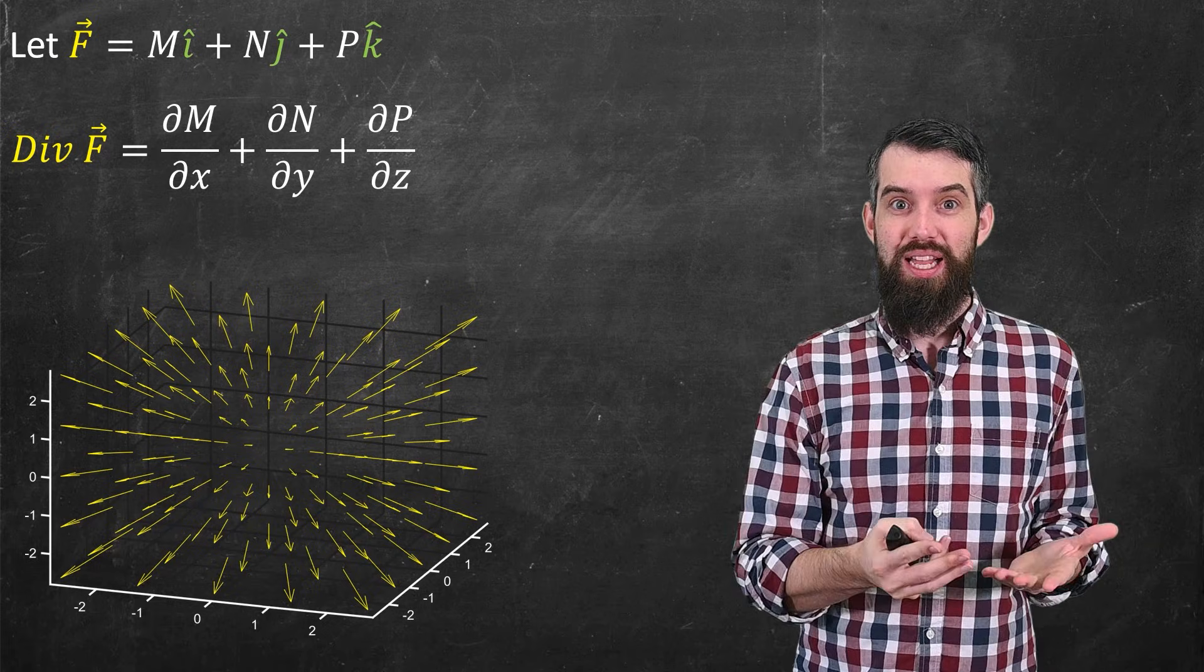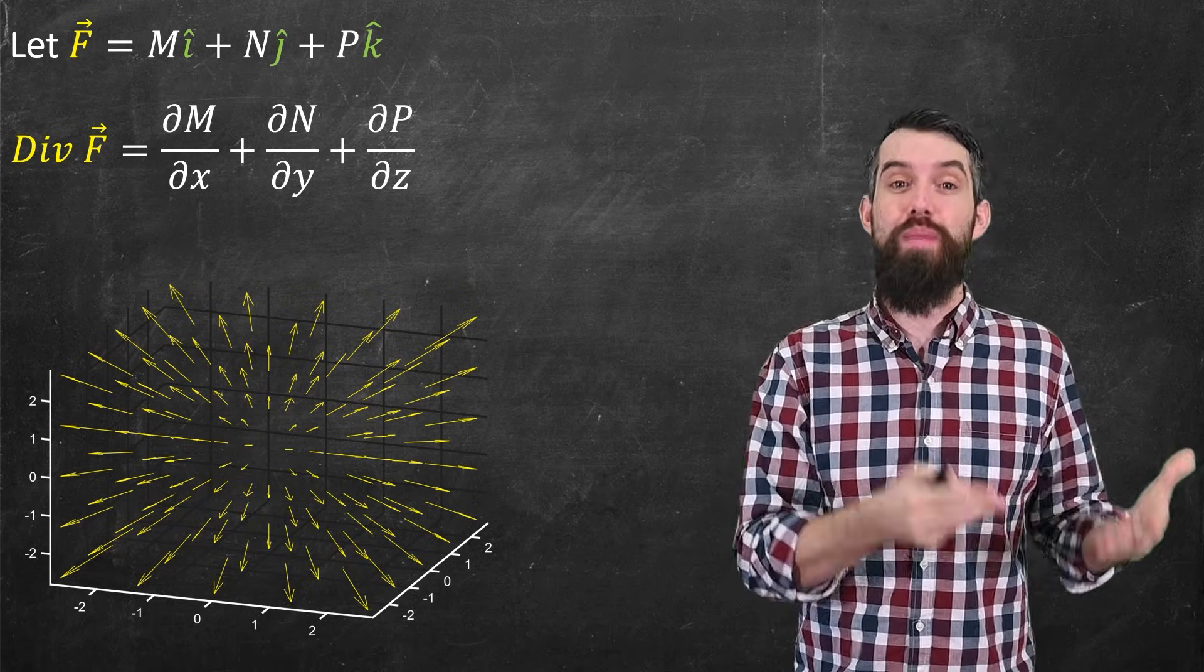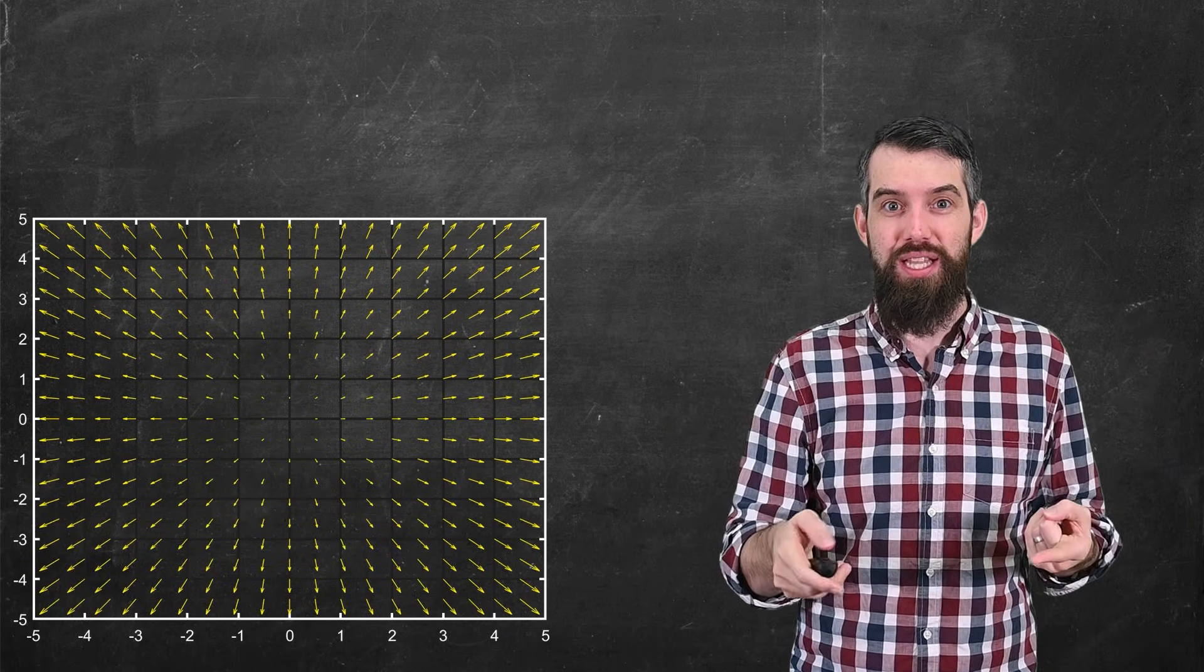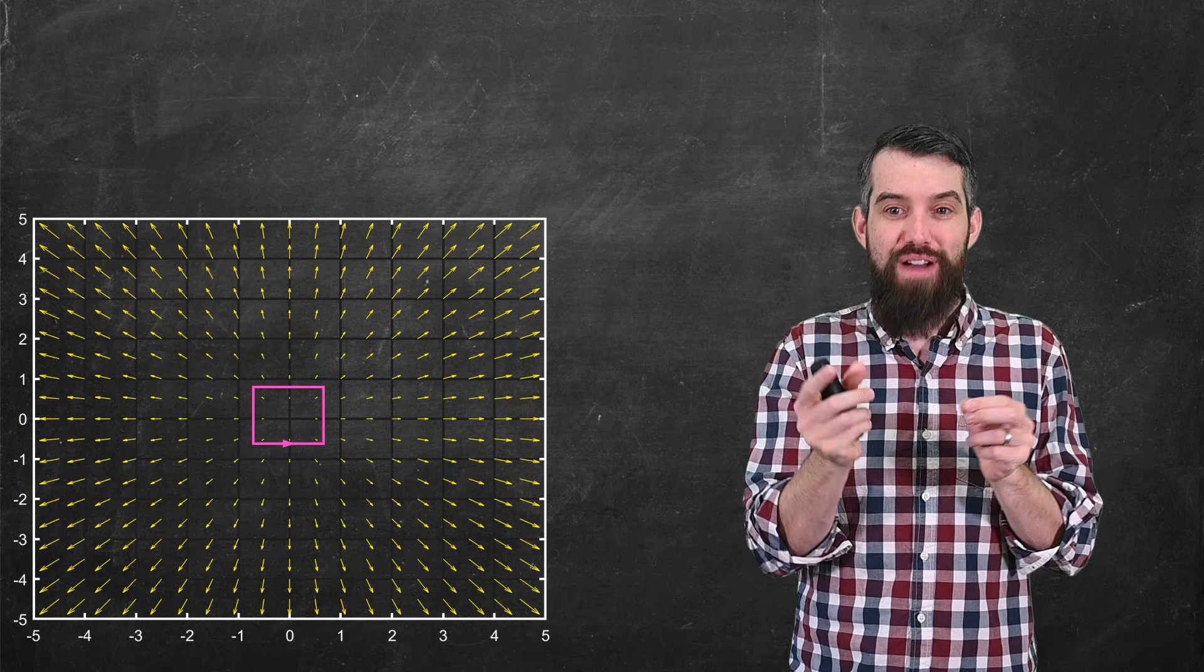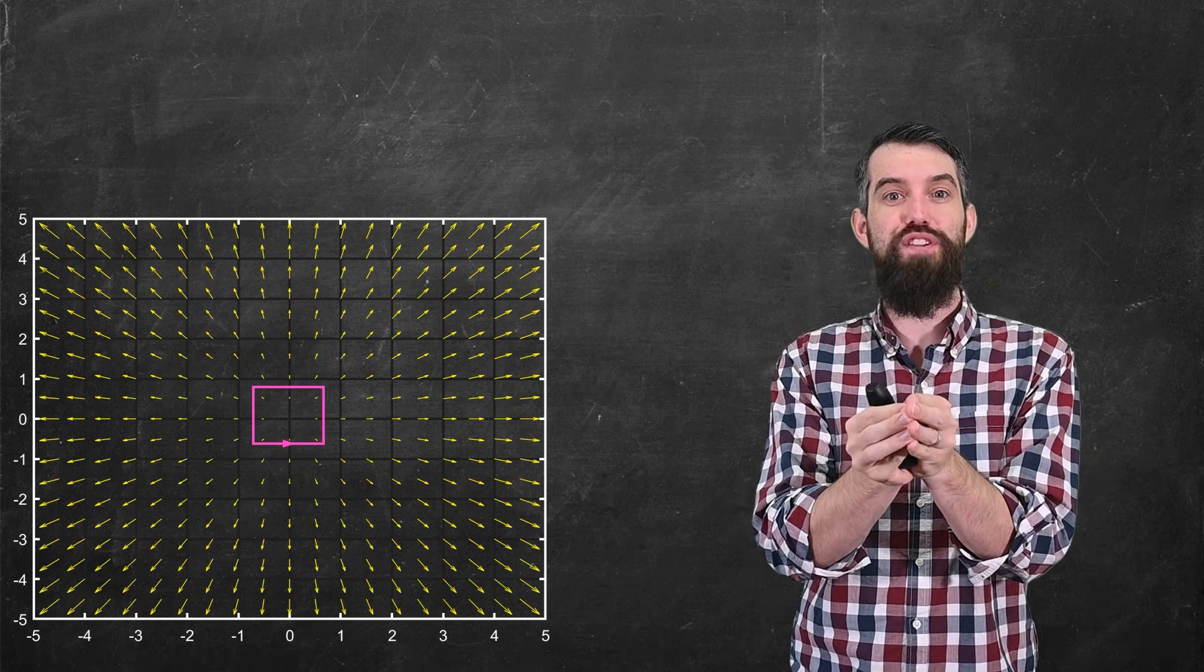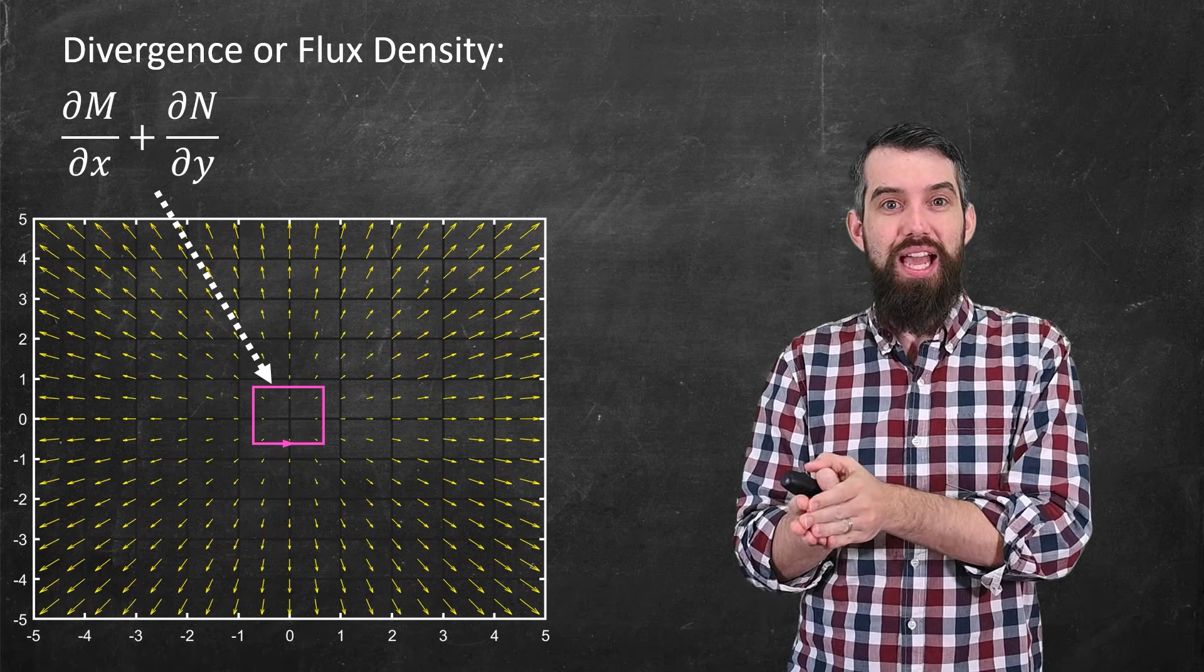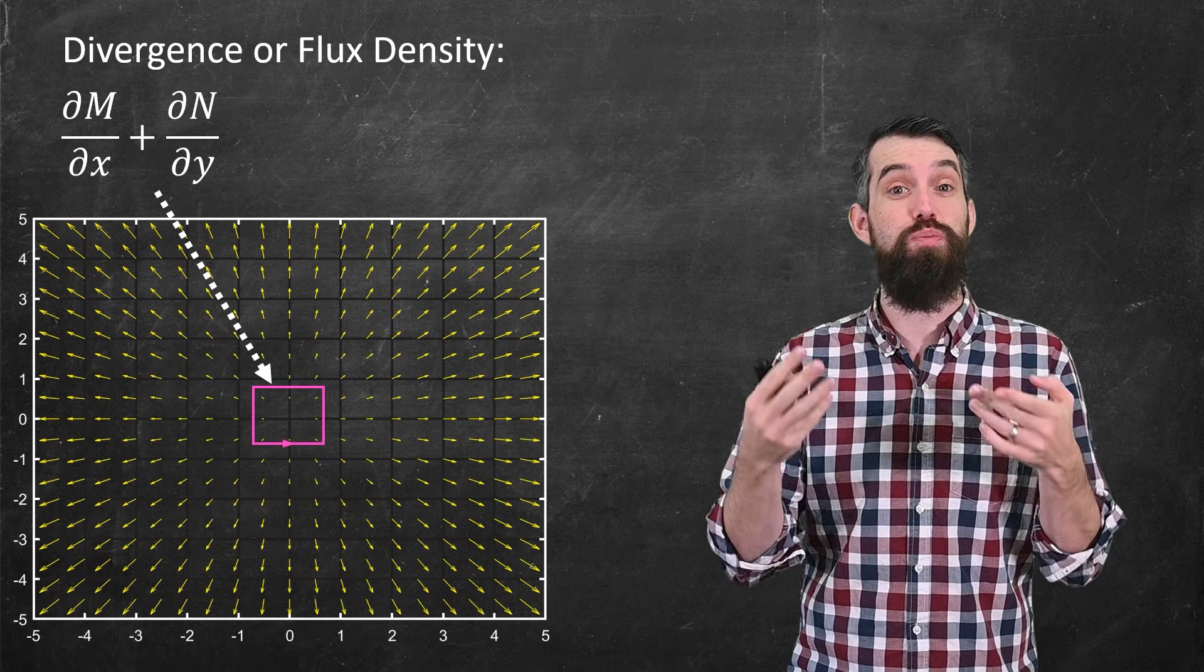But what is this? Now we've actually seen divergence before in the two-dimensional case. So there we were talking about the same basic type of field, a source field, but in two dimensions. And what we studied was the effect on a tiny little rectangle. If I zoomed very far in, what was the degree to which the field was crossing out across this boundary? That we call the divergence, or sometimes the flux density, and it could be measured by the partial of m with respect to x plus the partial of n with respect to y.